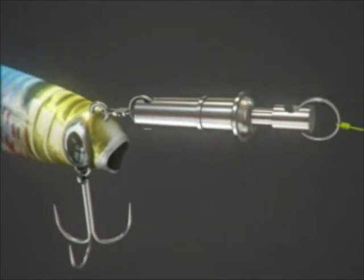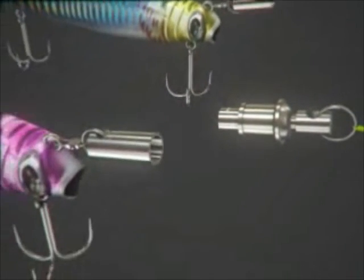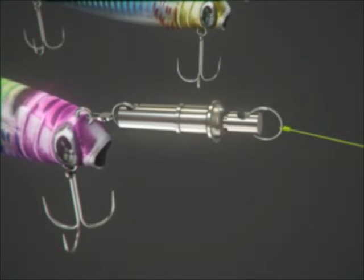To change lures, a simple press allows another lure, which is pre-assembled to a female half, to be installed in seconds.